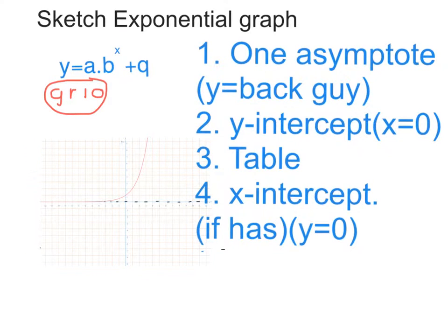This is the formula we use in Grade 10. Here are the four steps we use to draw an exponential graph. First, we find the one asymptote y equals q. Second, we work out the y-intercept by making x equal to zero. Third, we use a table to find one or two more coordinates. Fourth, we work out the x-intercept if it has one by making y equal to zero.